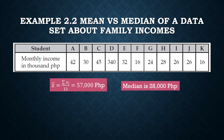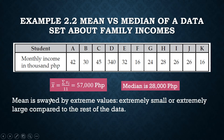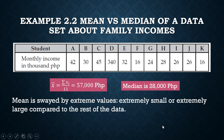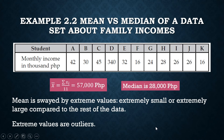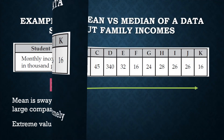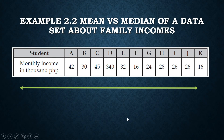Why did we get two measures of central tendency that are so different? That's because the mean is swayed by extreme values — extremely small or extremely large values compared to the rest of the data. We do have an extreme value here: 340K. If we were to plot these numbers on a real number line, most of them would be clustered around a single point, but there is one outlier — 340K.